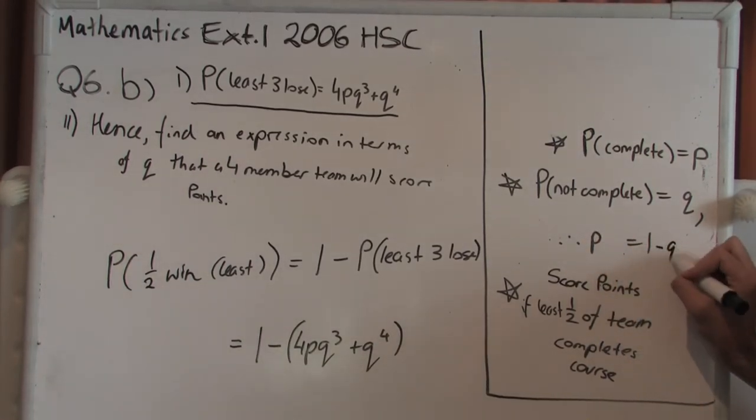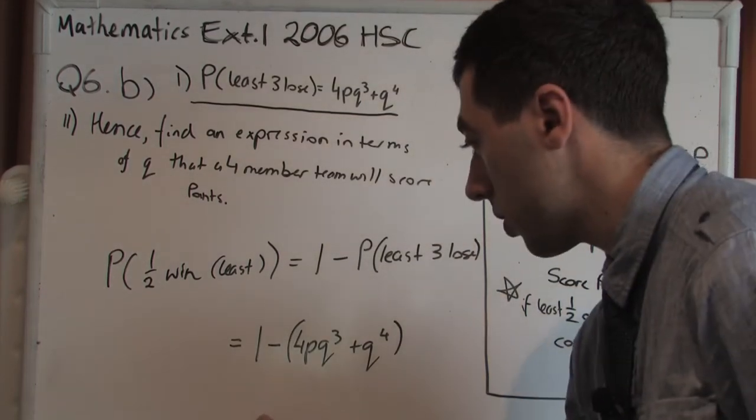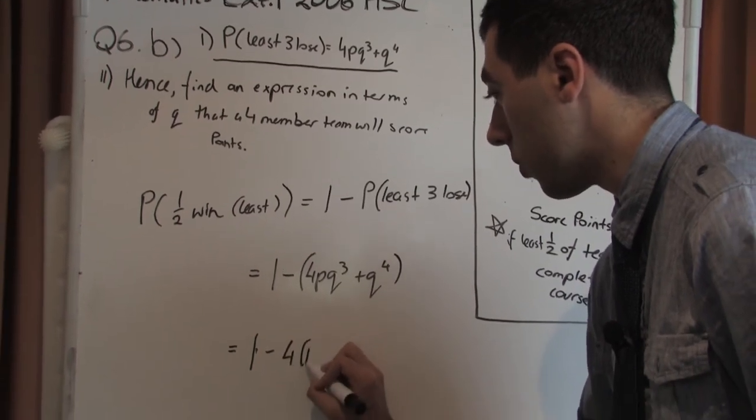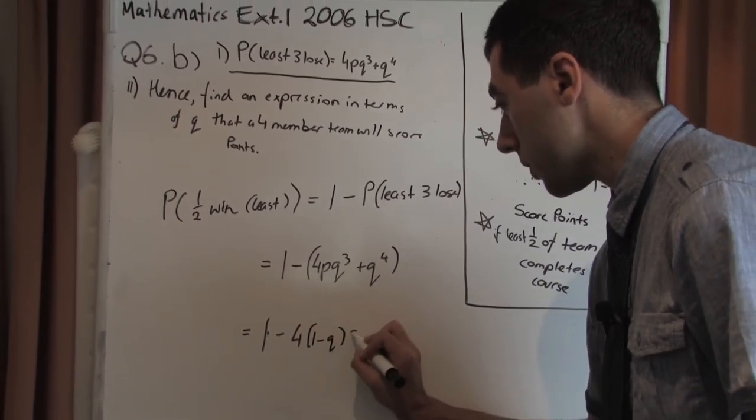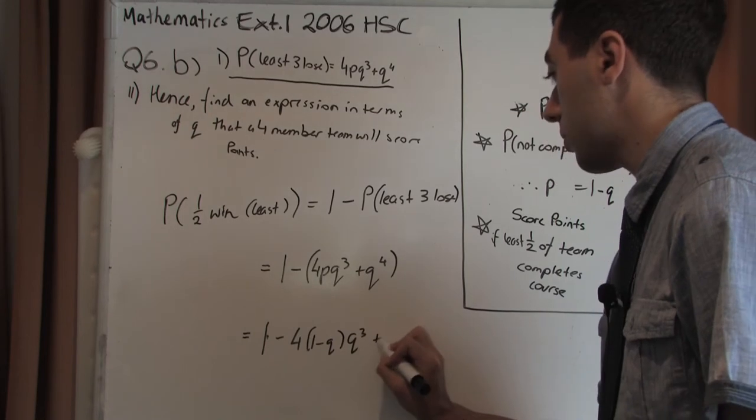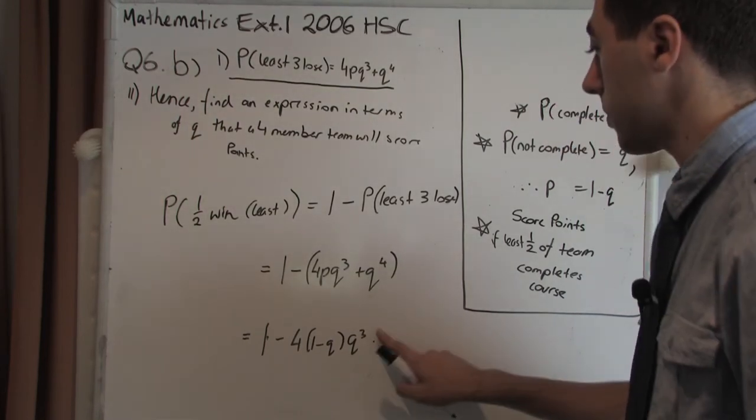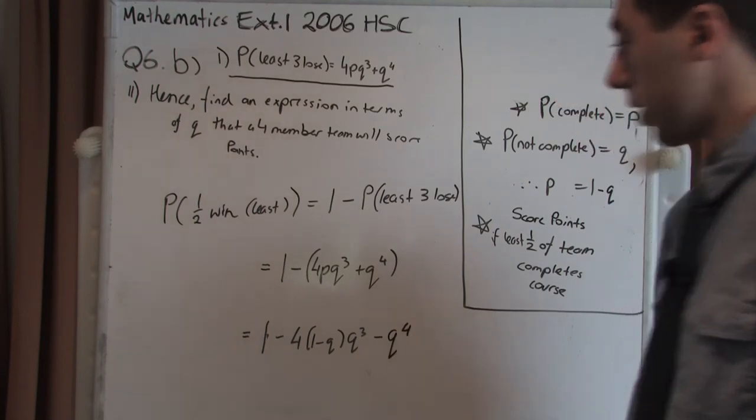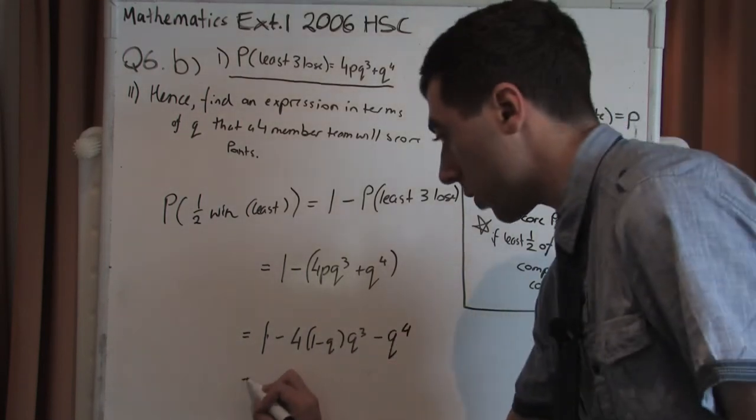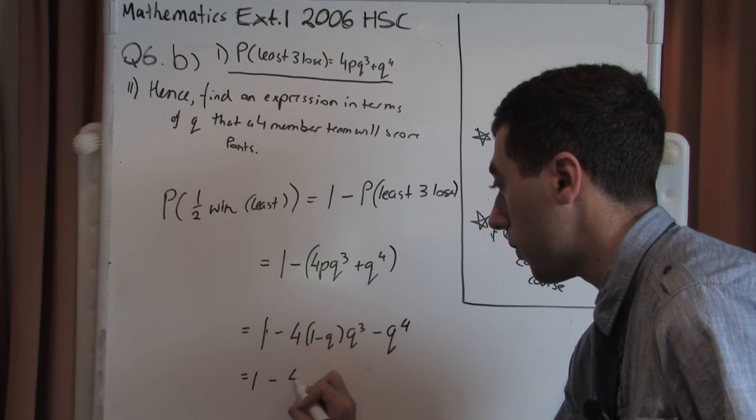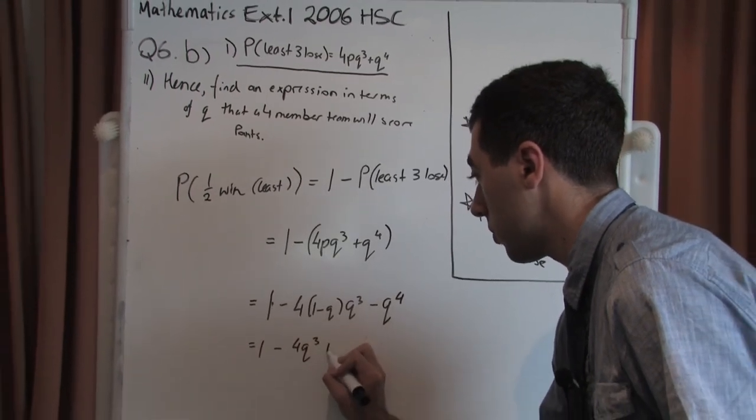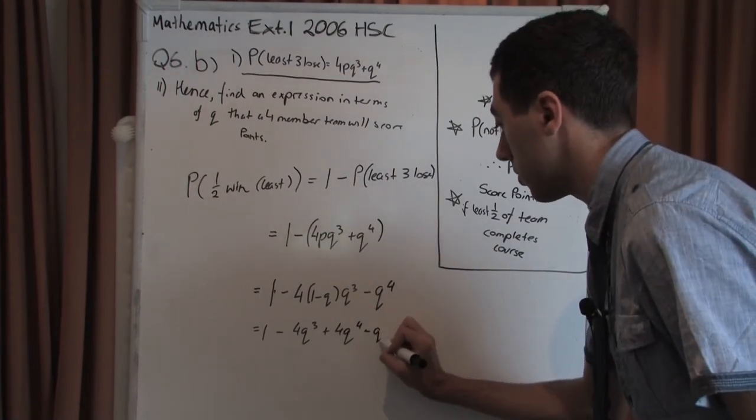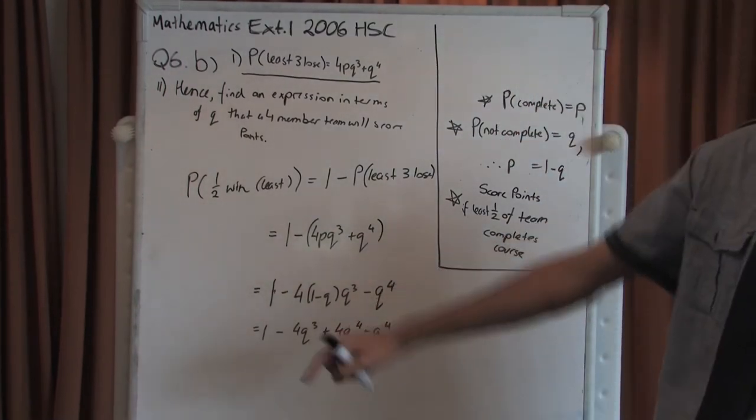So expanding this, we get 4 times (1 minus Q) times Q³ plus Q⁴. Now we expand this again. We're going to get 1 minus 4Q³ plus 4Q to the power of 4, and then minus Q to the power of 4. And again, grouping like terms...